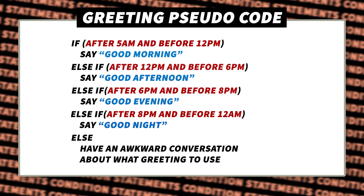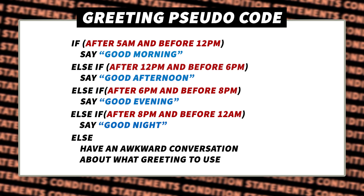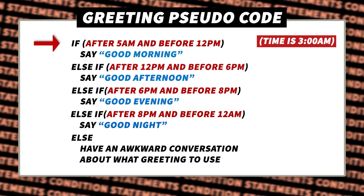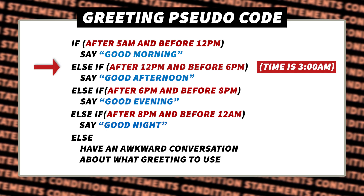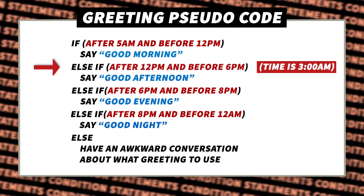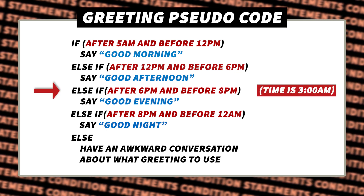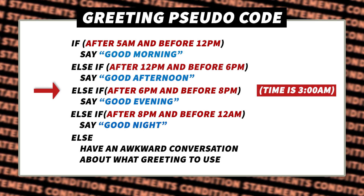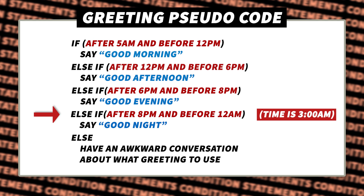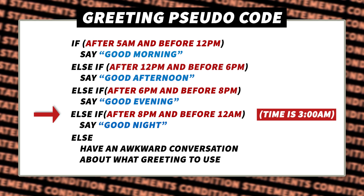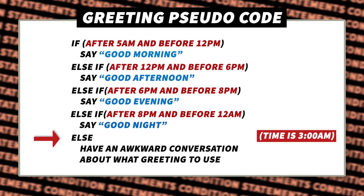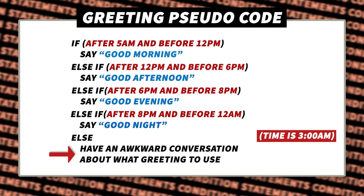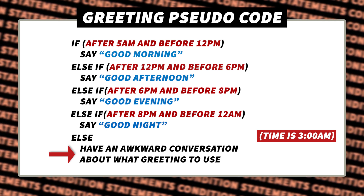Now let's look at this code for when it is 3am. The first if statement — after 5am before 12pm — is false. After 12pm and before 6pm is also false. After 6pm and before 8pm — 3am makes this false. After 8pm and before 12am is also false. So we skip all of the ifs and else-ifs, reach the else, and execute it — having an awkward conversation about what greeting to use at 3 in the morning.